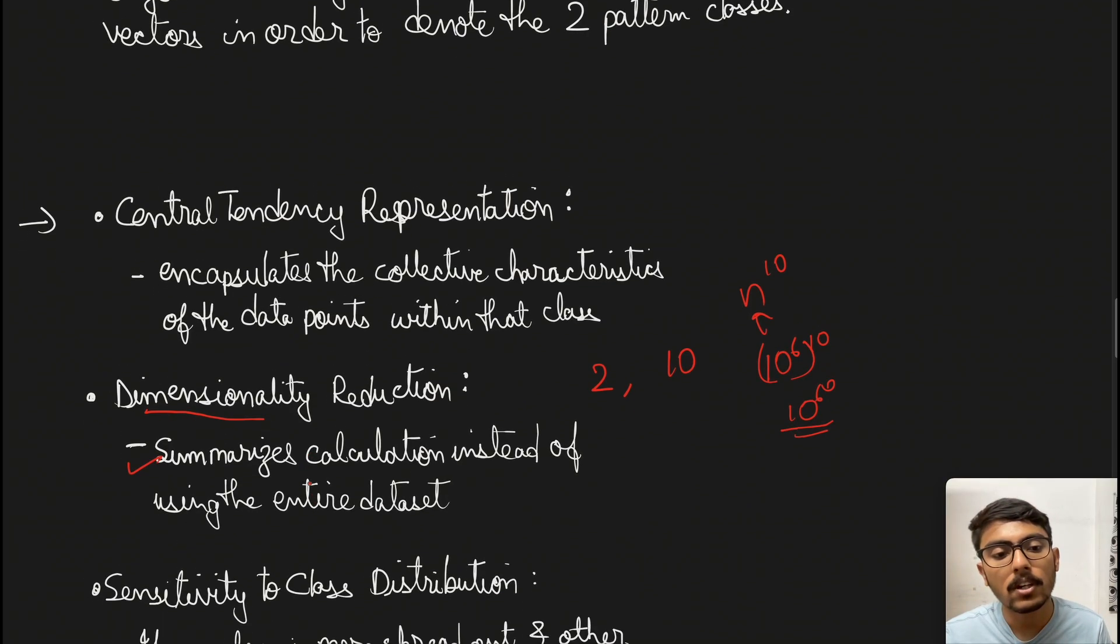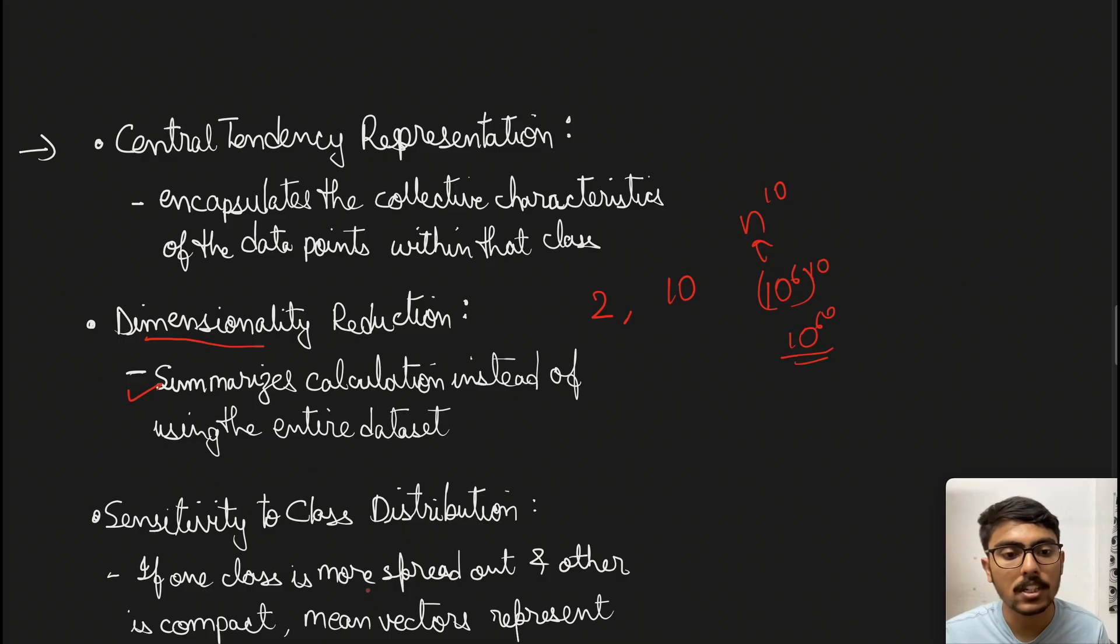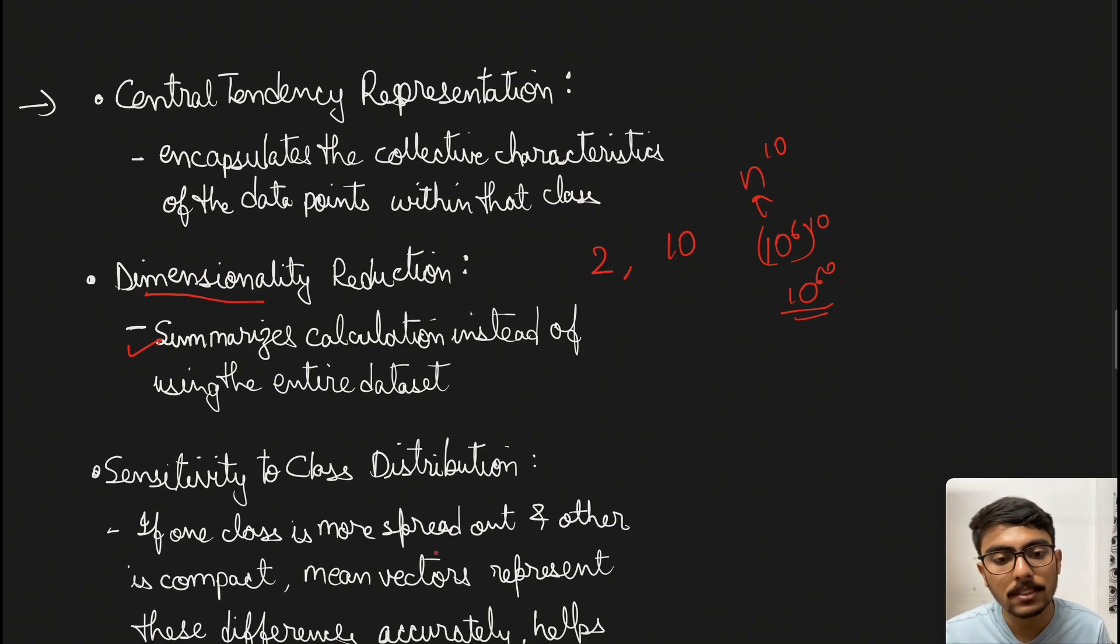Next is sensitivity to class distribution. Suppose we took out the mean, we're performing classification, and in future the distribution changes. Our decision boundaries would change as well. We cannot stick to the same decision boundary and classify based on the previous distribution. We'll just recompute the mean vector, which points out how much deviation from the previous mean occurred.